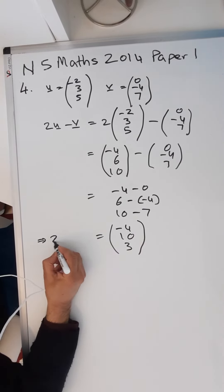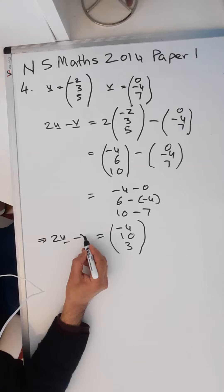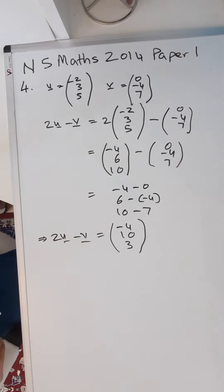So that means that two u minus v is minus four, ten, three.